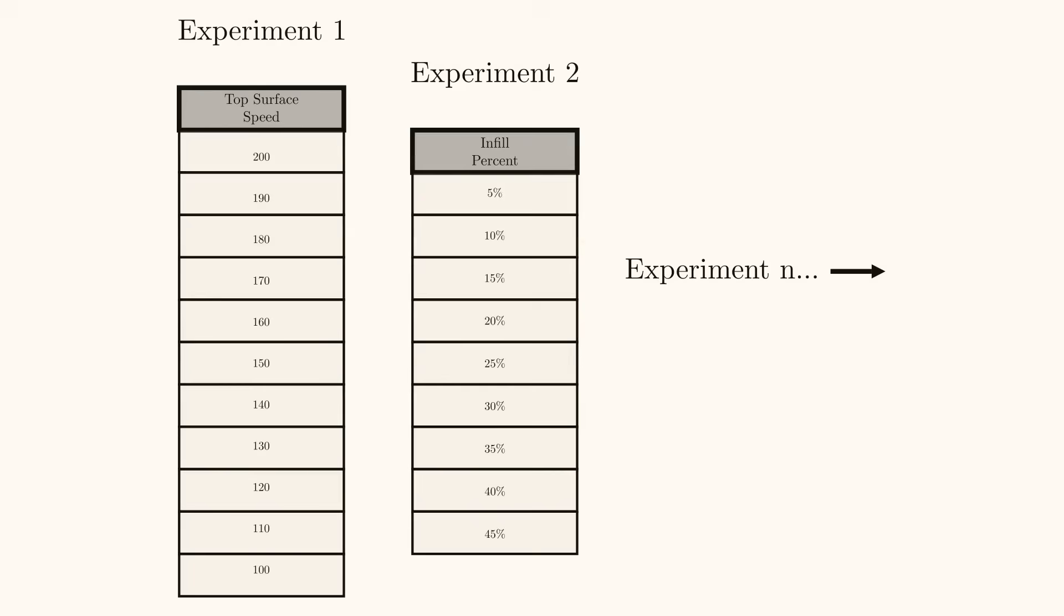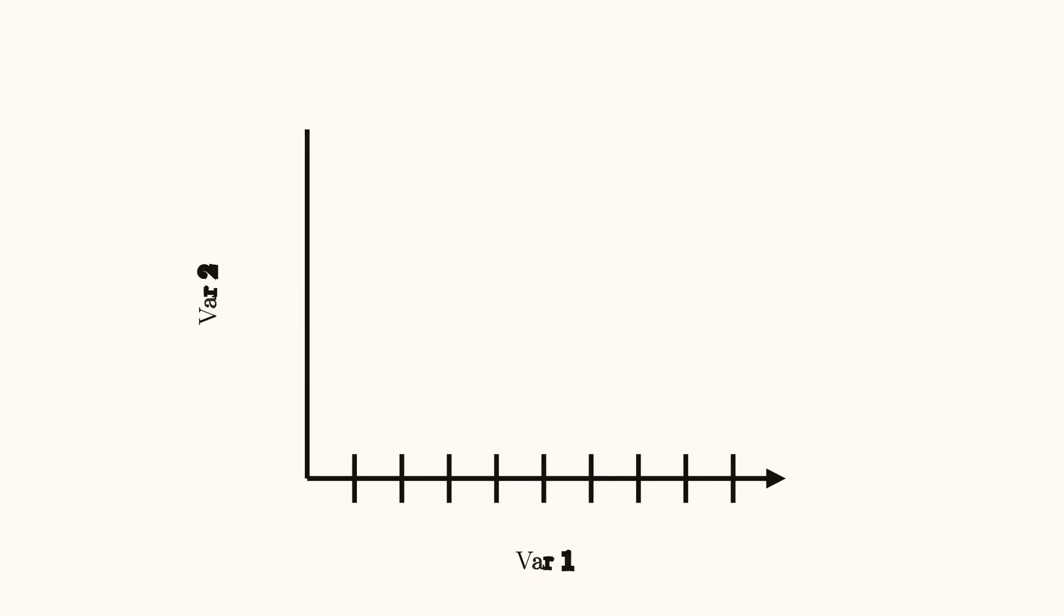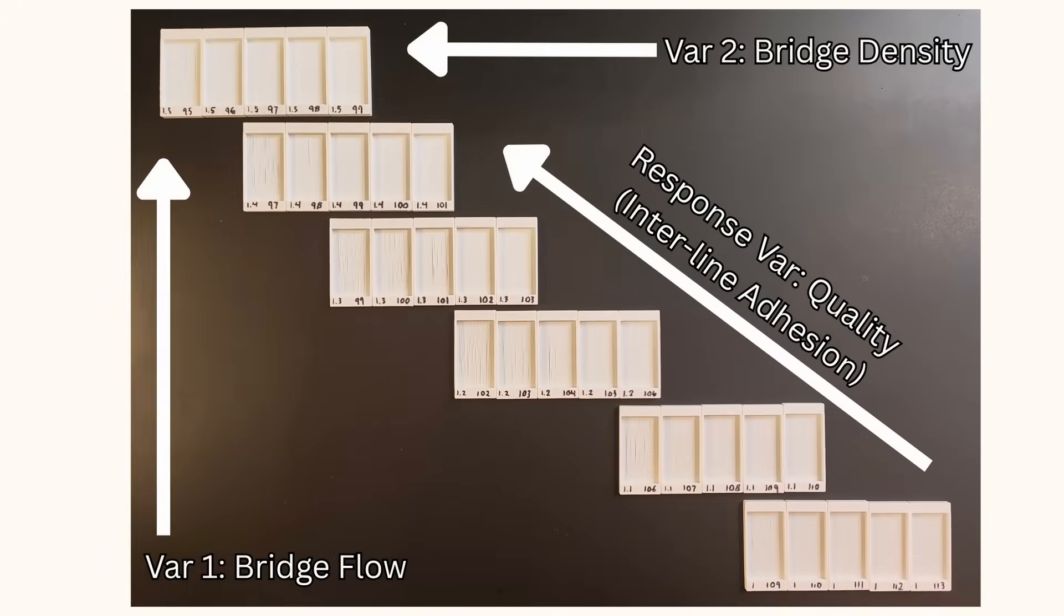One, these experiments are expensive because they require a lot of samples to fully define the relationships you're investigating. Two, these experiments do not make it easy to recognize variable interactions. In this context, a variable interaction is when the value of one independent variable is influenced by another. For example, when bridge flow is increased, bridge density must be decreased to help maintain bridge quality.